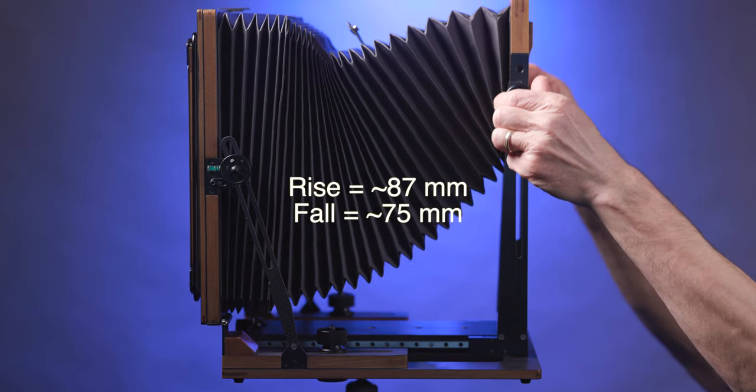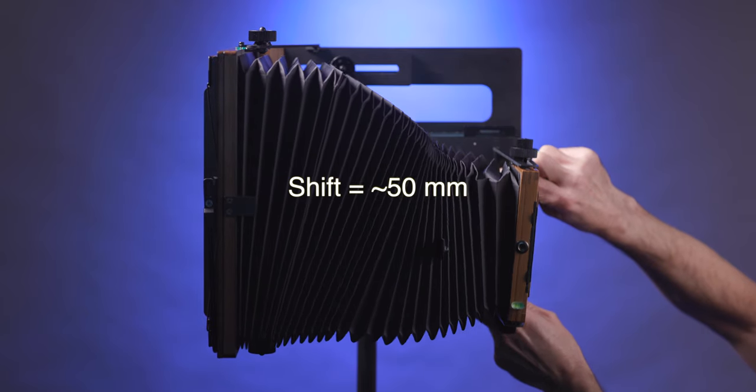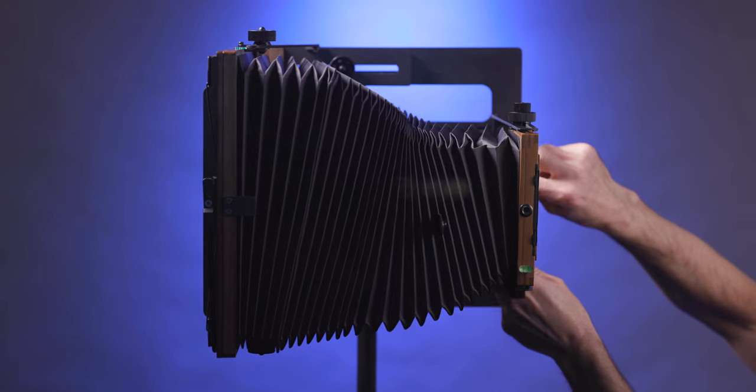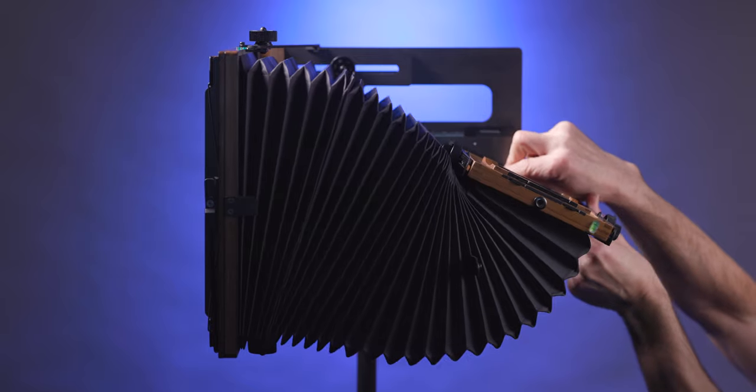There is about 3.5 inches of rise and about 3 inches of fall. There is an equal amount of left and right front shift of about 2 inches with a very generous amount of swing that is limited only by the bellows.